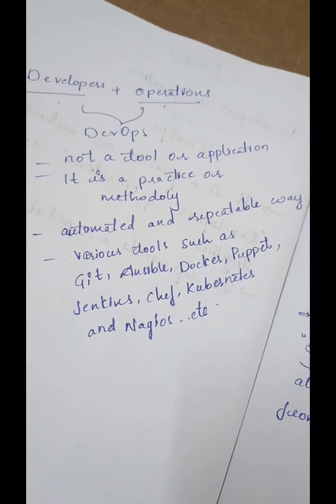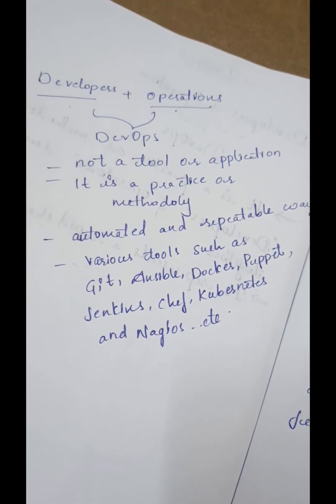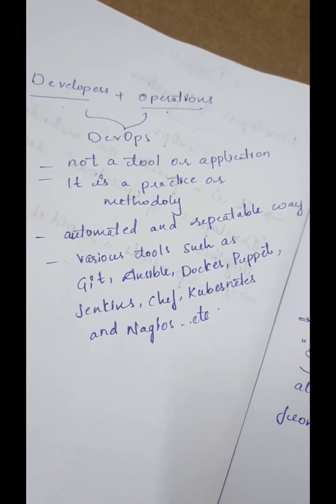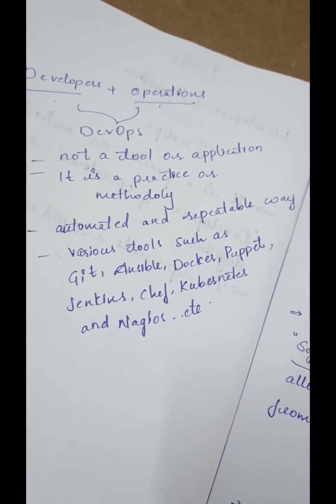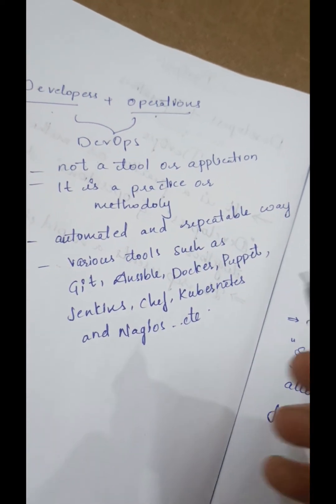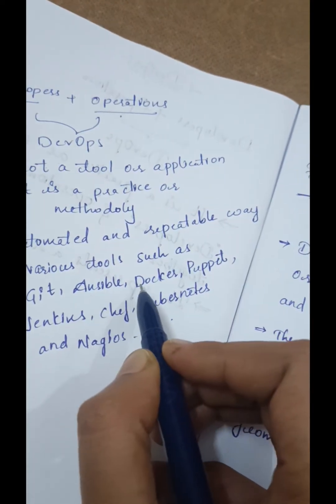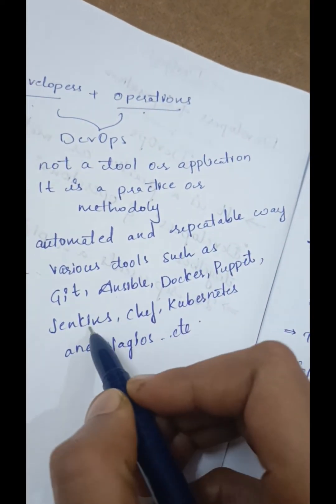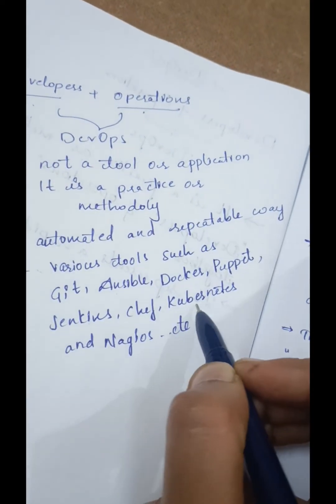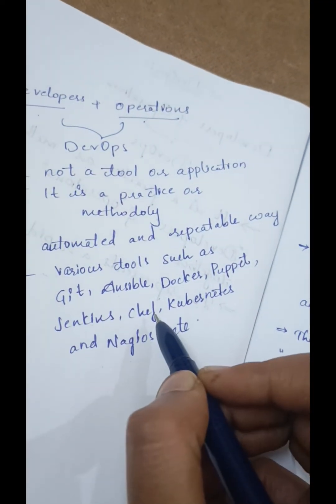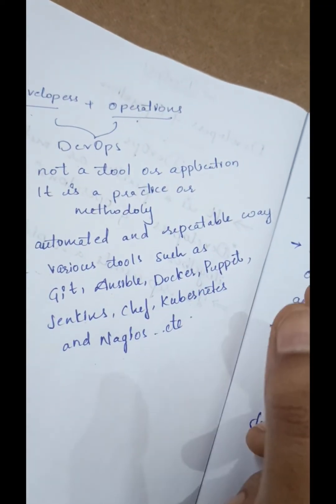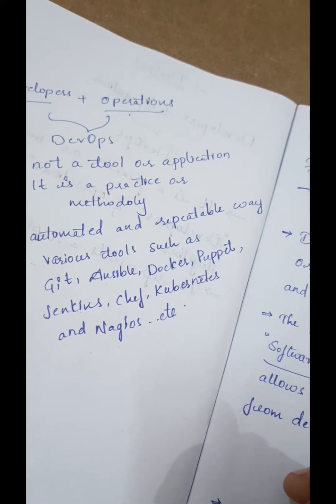DevOps will help you to learn DevOps basics and tools. In-depth knowledge of various tools such as Git, Ansible, Docker, Puppet, Jenkins, Chef, Kubernetes, and Nagios. These tools are used in different stages of the DevOps process.